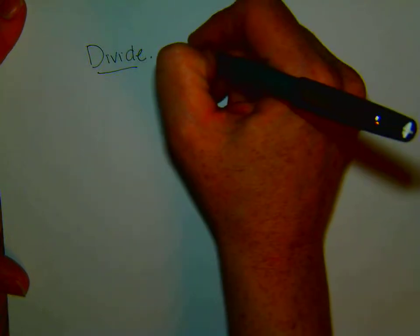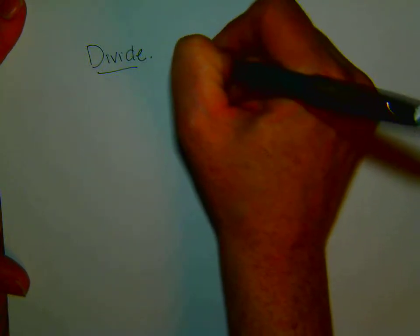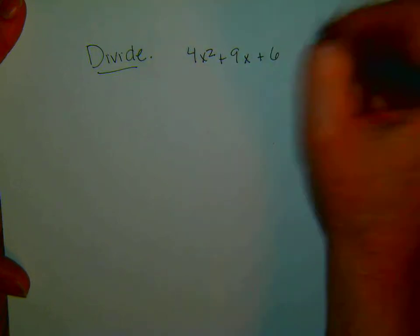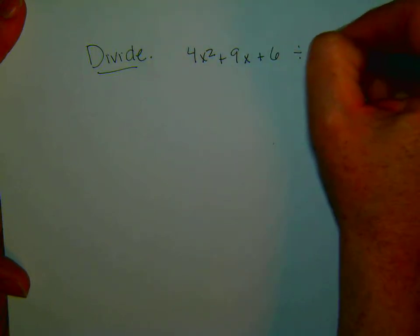We're going to take the polynomial 4x squared plus 9x plus 6 divided by x plus 6.